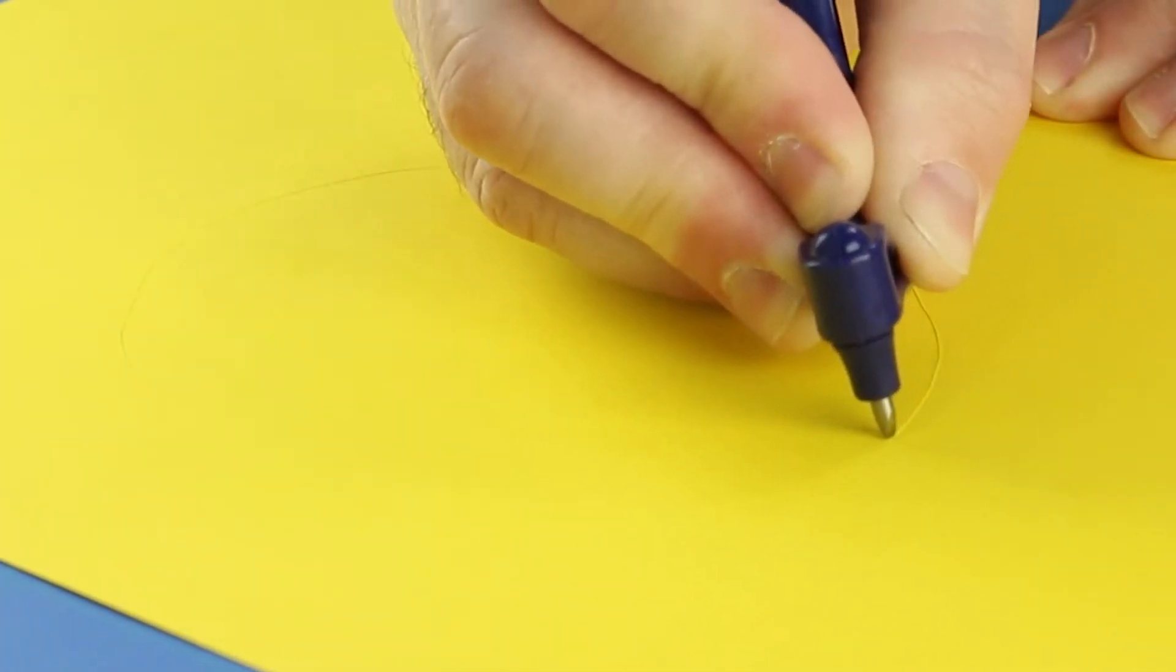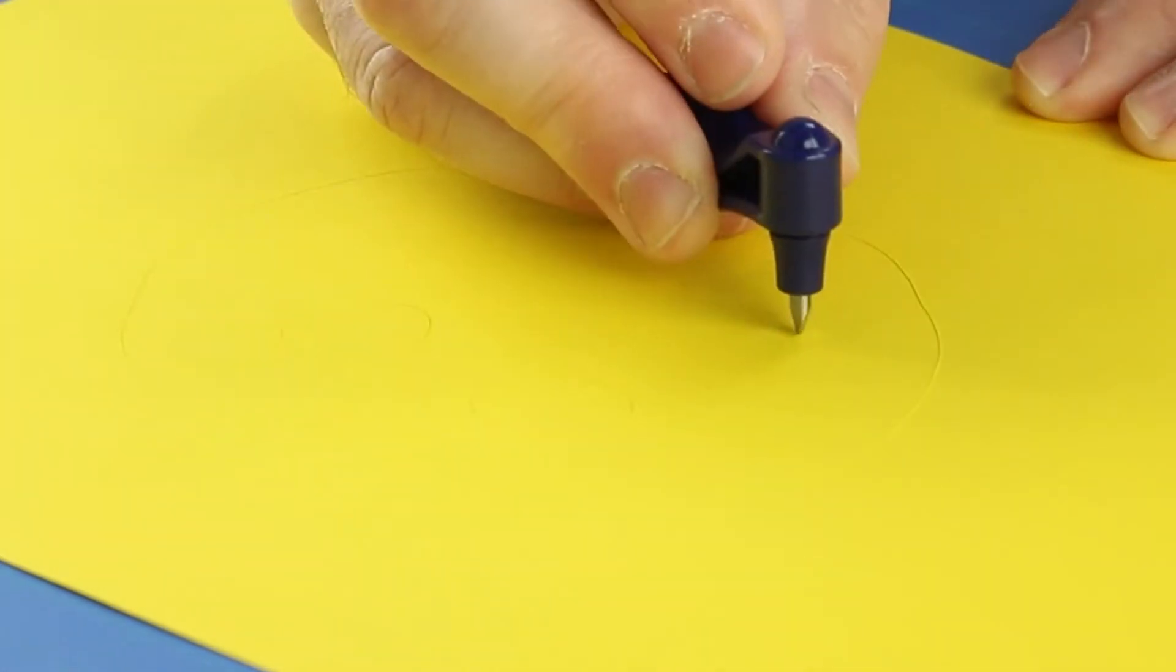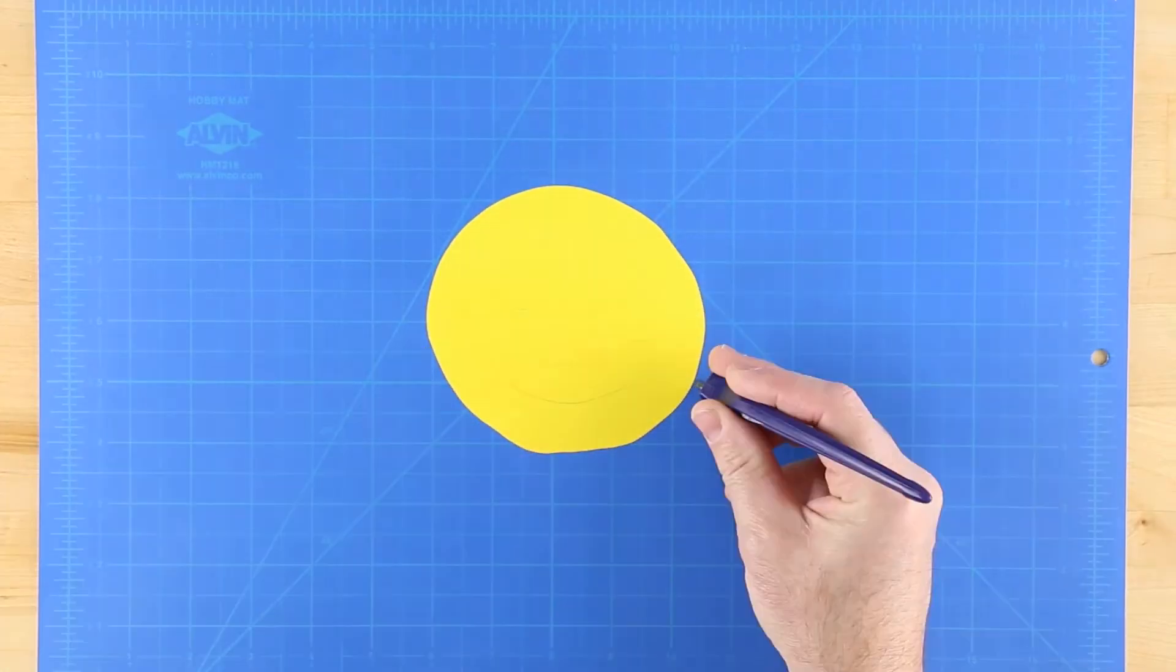Hold the GyroCut tool with the blade perpendicular to the material. As your hand changes direction, the blade turns automatically as only the sharp point of the blade makes contact with the surface being cut.